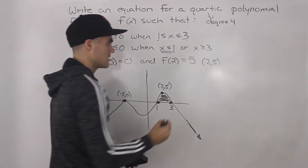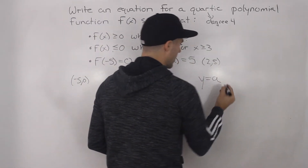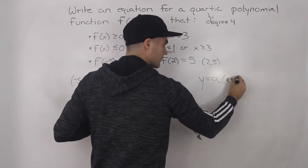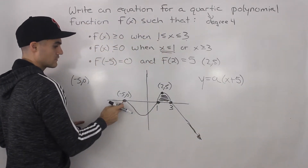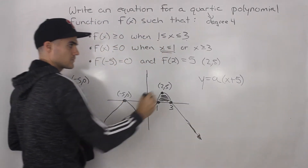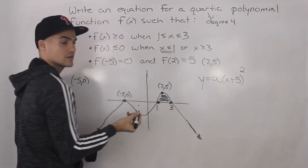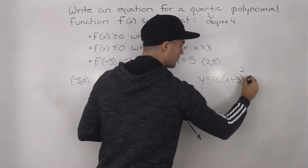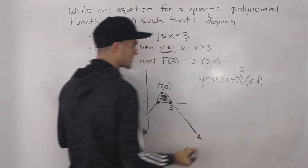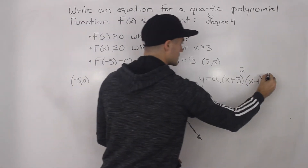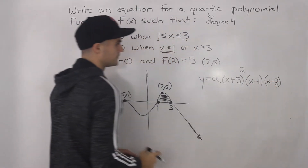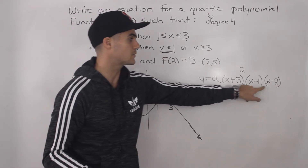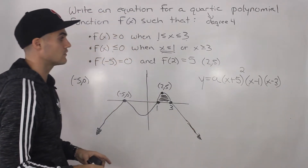Now we can write the equation: y equals a times (x plus 5) squared times (x minus 1) times (x minus 3). We use x plus five for the x-intercept at negative five, and because it's bouncing there, x plus five has an even order — so it's squared. Then x minus one for the intercept at one, and x minus three for the intercept at three. Notice this is a quartic polynomial: degree two plus degree one plus degree one adds up to a degree of four.